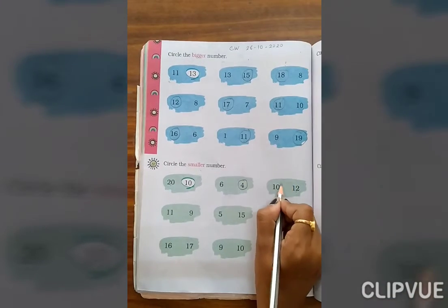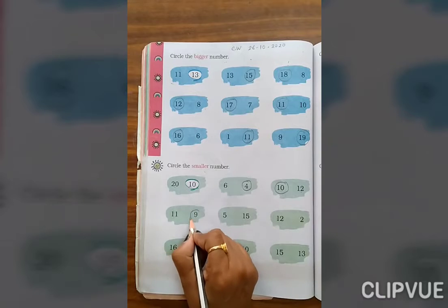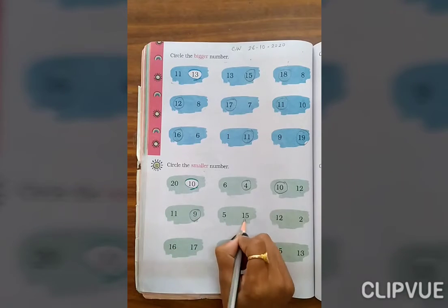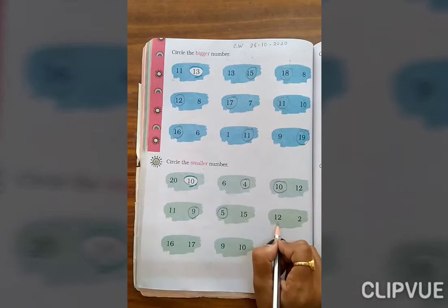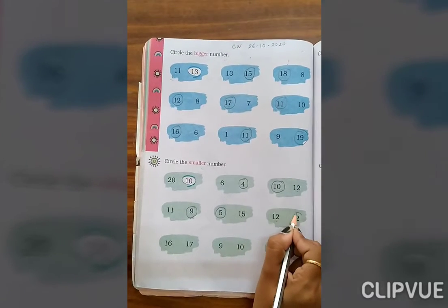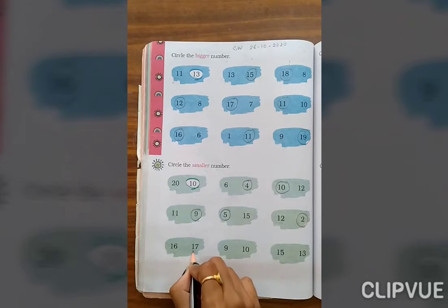10, 12. 10. 11, 9. Smaller, 9. 5, 15. Then 5 number. 12, 2. Which one is smaller? 2. 16, 17. Which one is smaller?